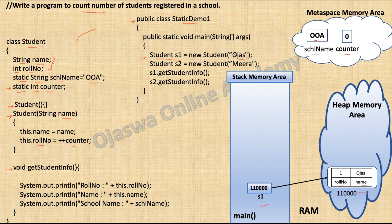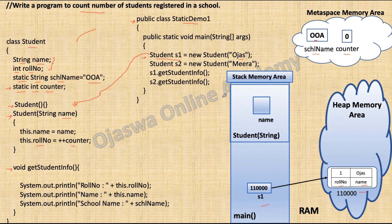We are passing a string argument 'Ojas'. As soon as the object is created, an implicit call goes to the parameterized constructor with one string parameter. Control of the program comes here and value 'Ojas' is captured by the local variable name. Memory for the local variables belonging to the parameterized constructor is reserved on the stack. We have one local variable, name, and the value passed through the object is stored in this name variable.